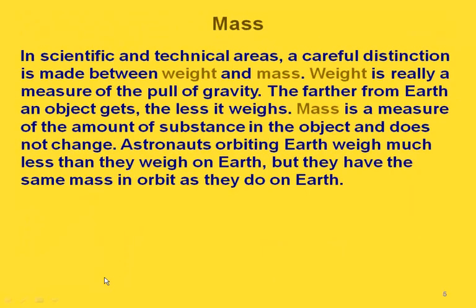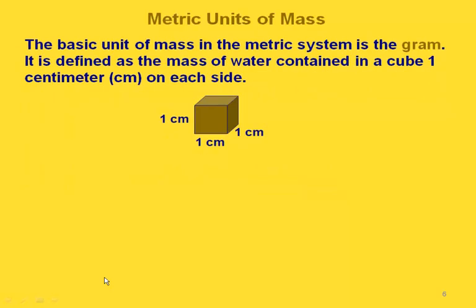When we talk about mass, most of the time mass and weight really mean the same thing. The only time they don't is if you're not on Earth where gravity is less. For example, on the moon you would still have the same mass as on Earth, but your weight would actually be different. When we talk about metric units, we call them metric units of mass, but we're really talking about the same thing as weight in U.S. units. The basic unit of mass in the metric system is the gram, which equals the mass of water contained in a cube one centimeter on each side.